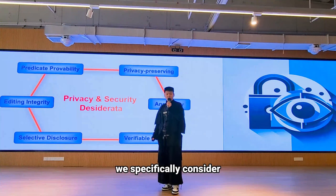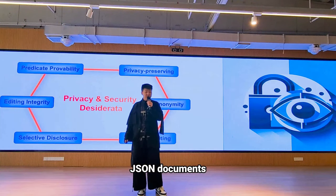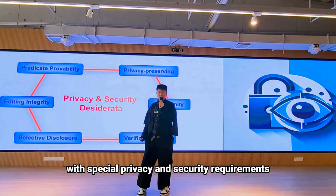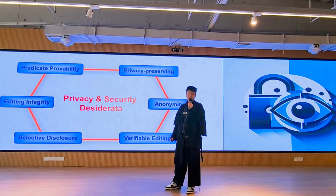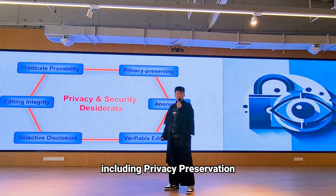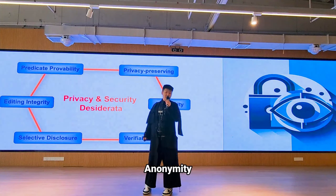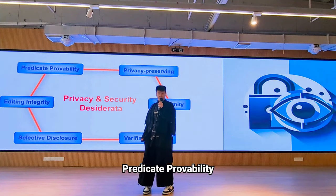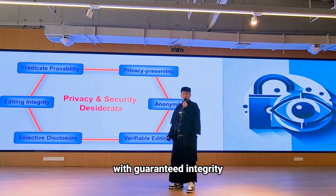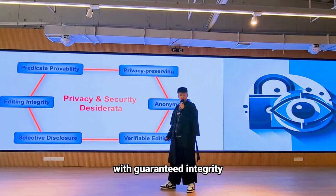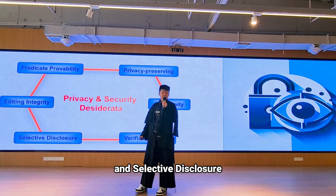In this paper, we specifically consider JSON documents with special privacy and security requirements, including privacy preservation, anonymity, predicate provability, verifiable editing with guaranteed integrity, and selective disclosure.